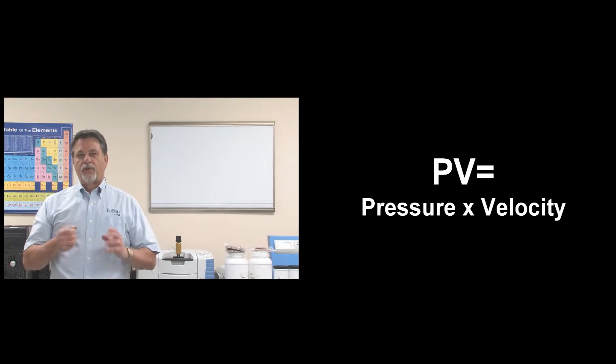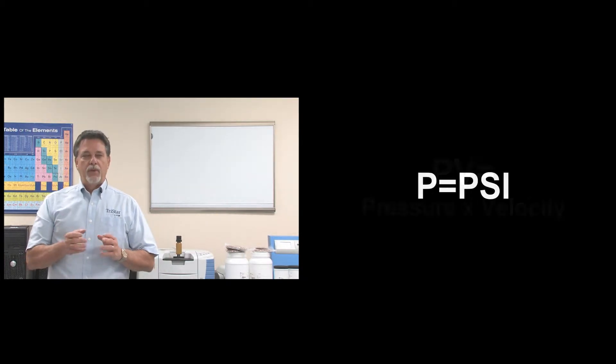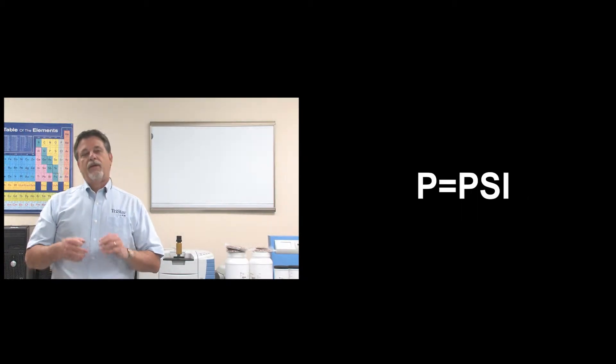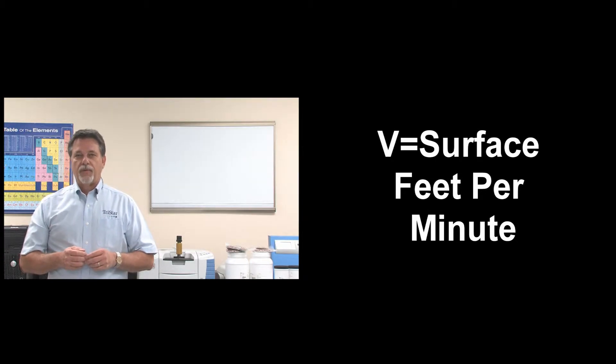Now PV is pressure times velocity, the P being expressed as PSI, the V being expressed as surface feet per minute.